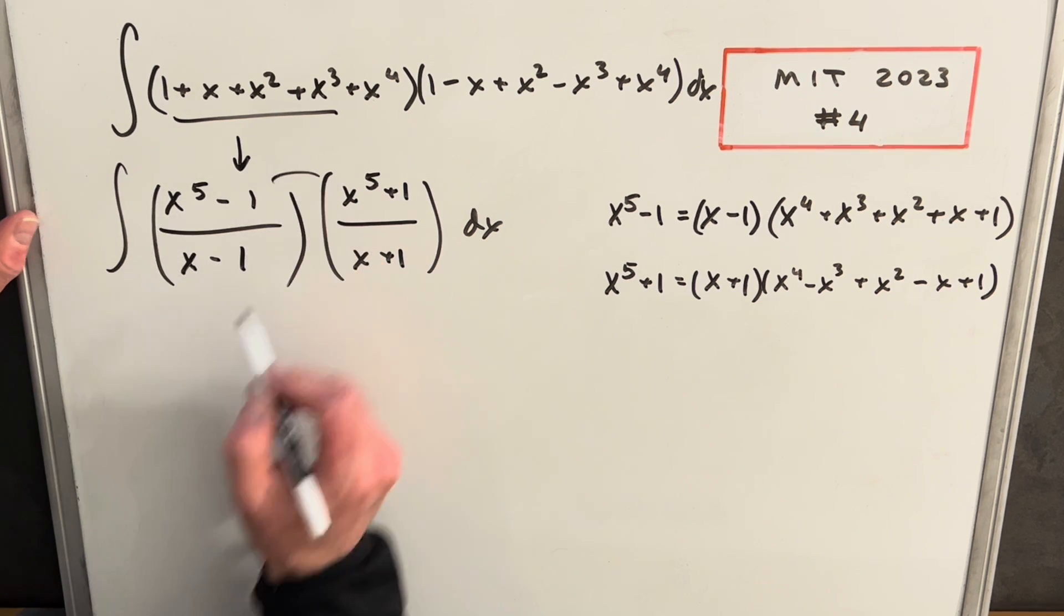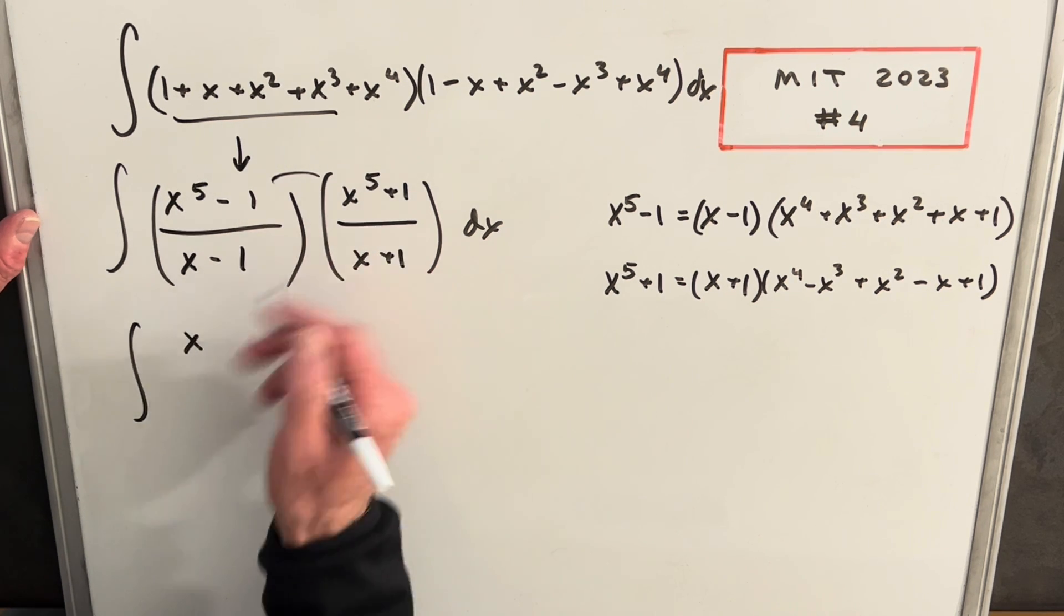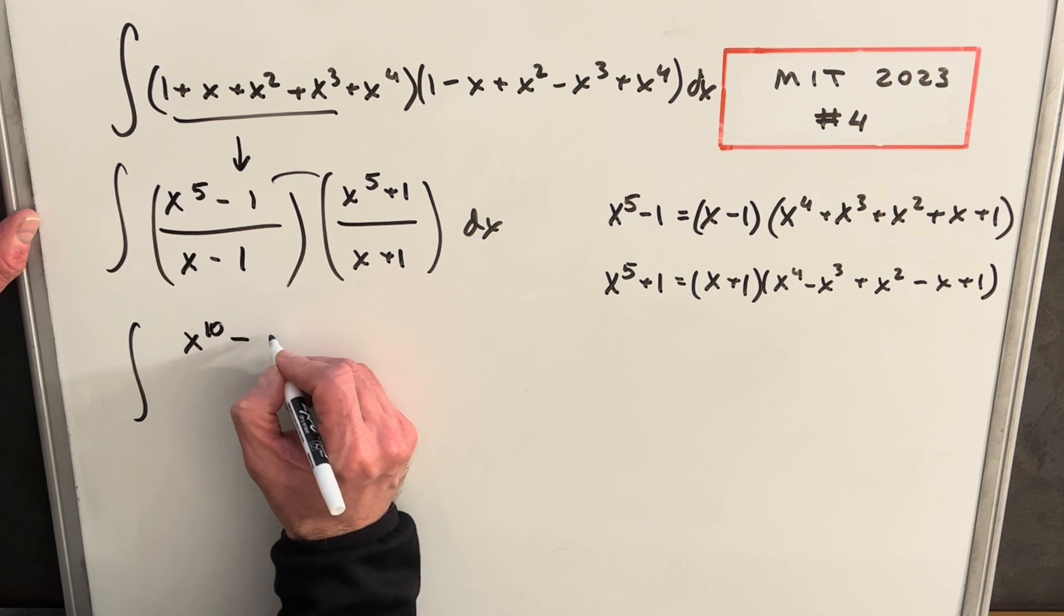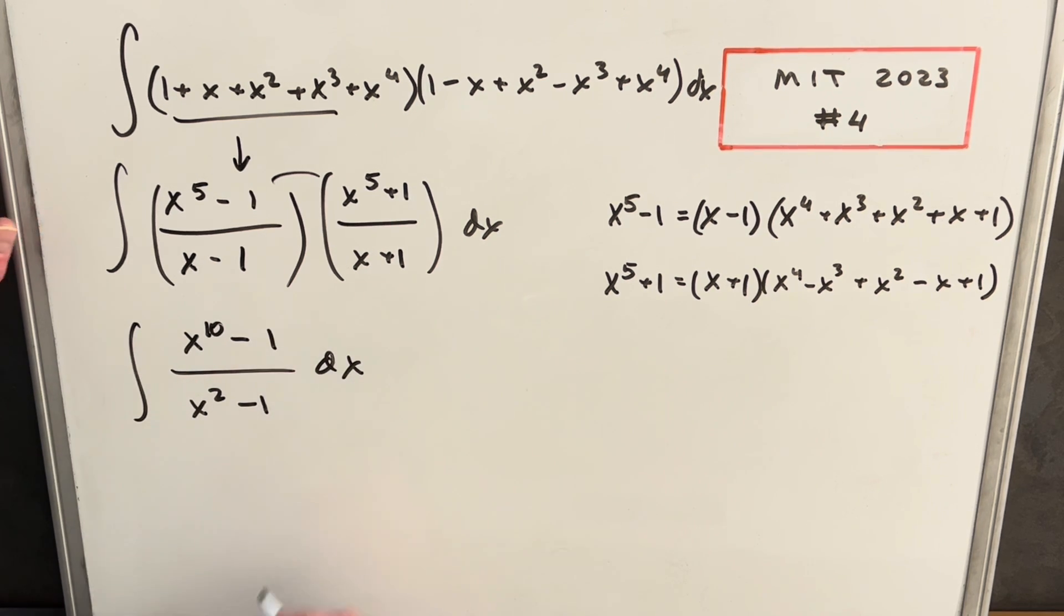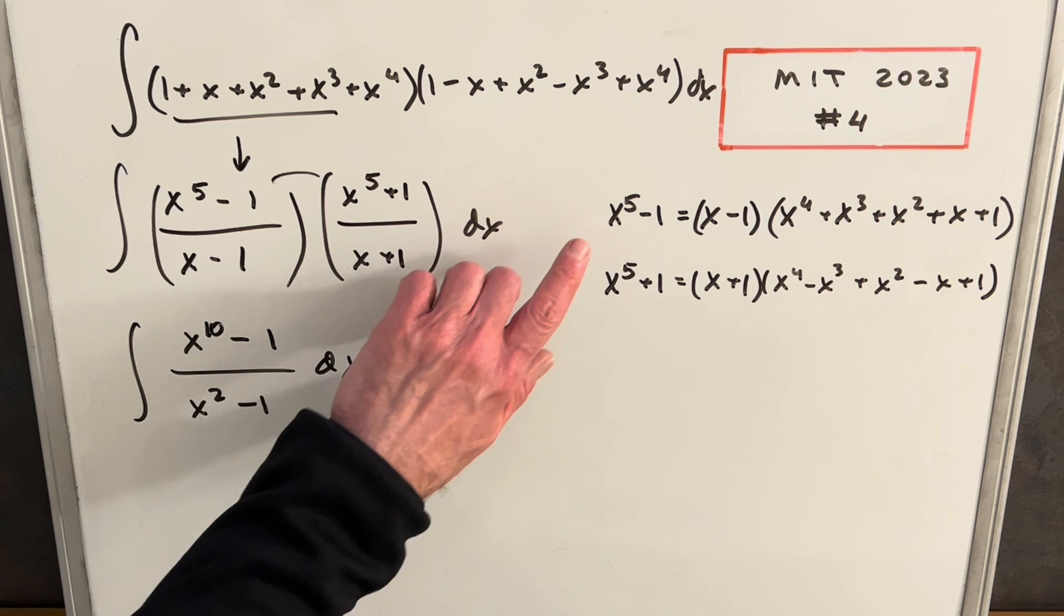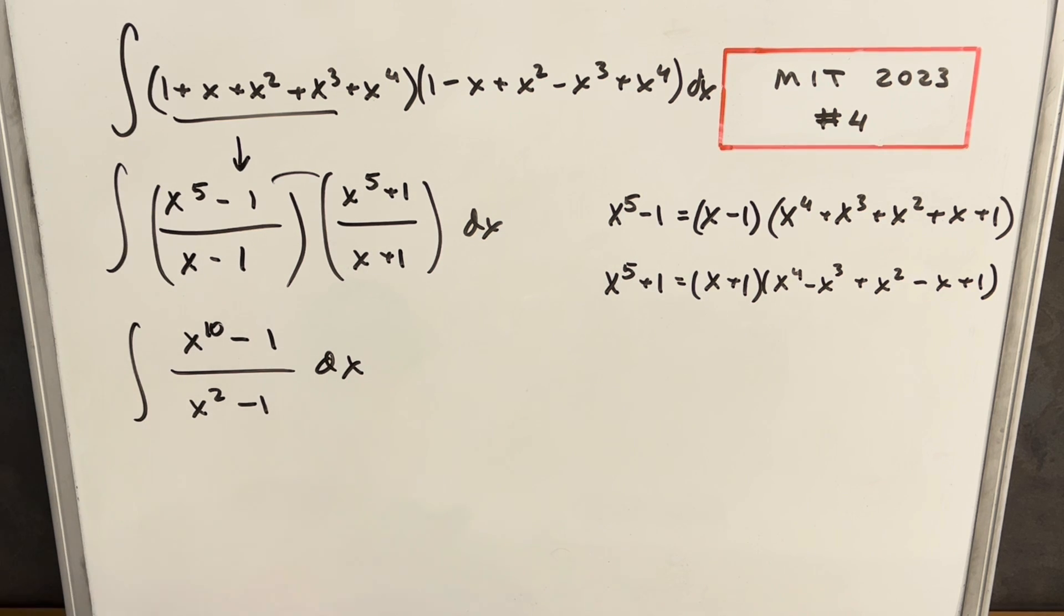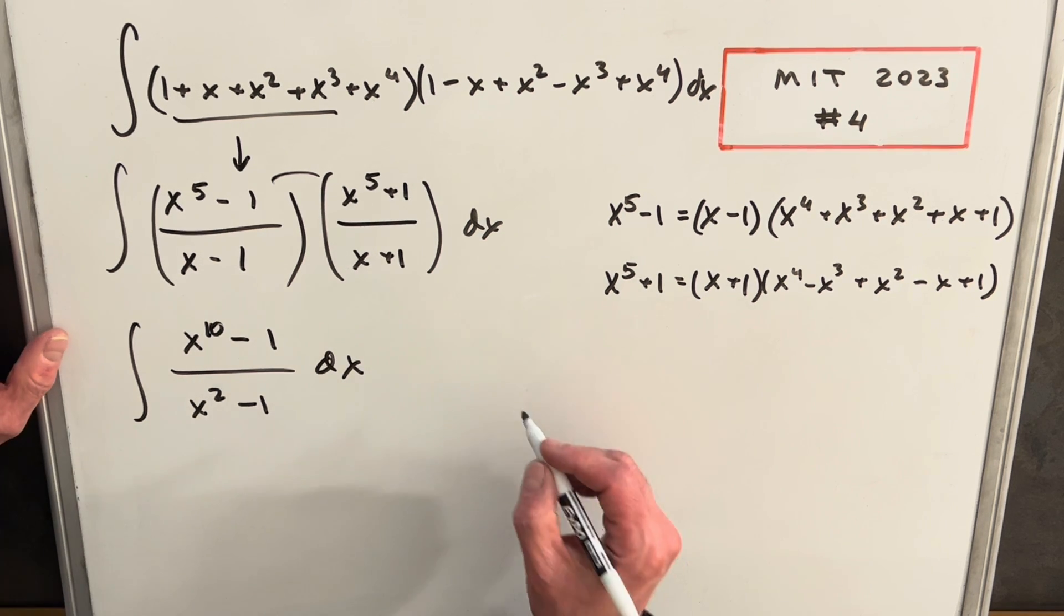And then we can just multiply these two things together. So we're going to have, just like a difference of squares, (x¹⁰ - 1)/(x² - 1) dx. And then from here, we could do polynomial long division on this. But I think again, this looks pretty similar to what we have over here—we might be able to use the same kind of pattern. So let's take a look at this separately.